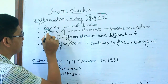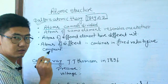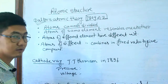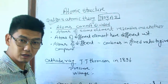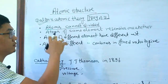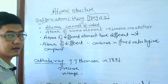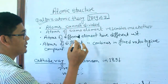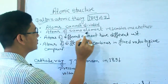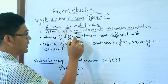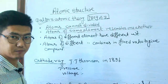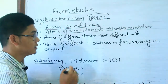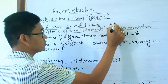The first postulate: atoms cannot be divided. Atoms cannot be divided by themselves. Dalton also said that atoms of the same element are the same — atoms of the same element appear to have the same properties.